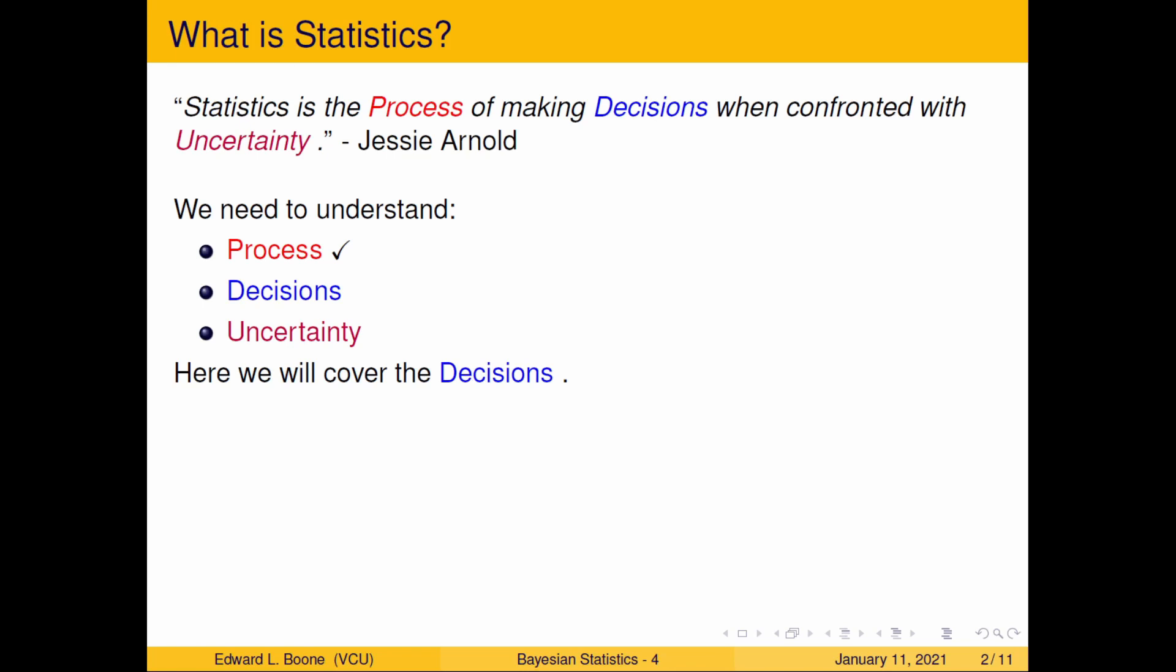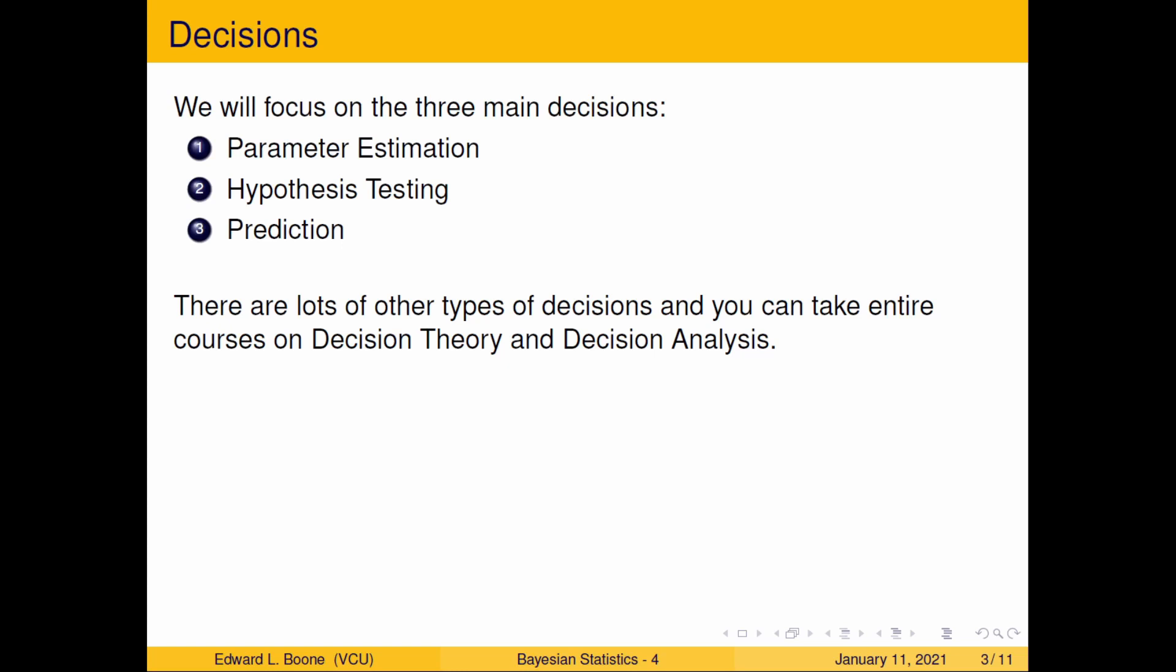In this video we're going to cover decisions. There are three main types of decisions: one is parameter estimation, two is hypothesis testing, and three is prediction. These will cover about 90 percent of most people's types of decisions.